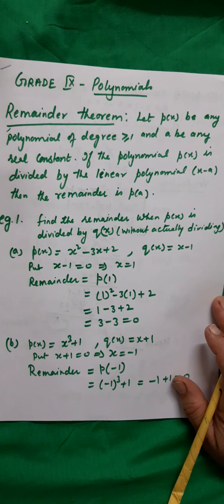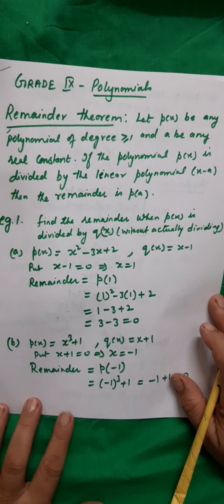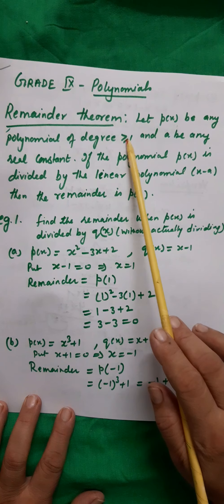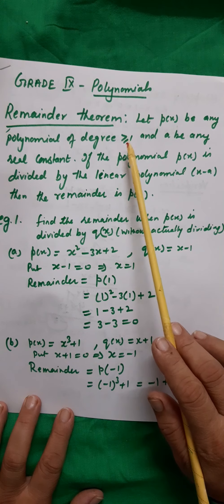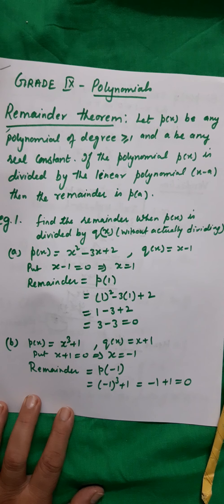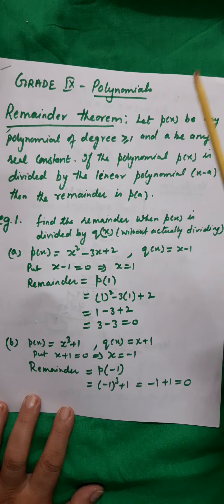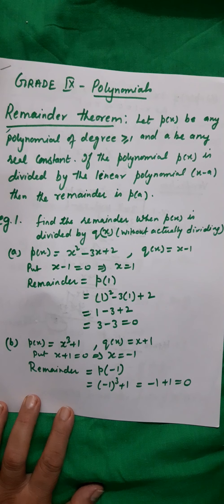This theorem means that if you have any polynomial of degree greater than or equal to 1 — it cannot be 0, because a degree of 0 means it is a constant polynomial. The polynomial must contain a variable, which is only possible if its degree is 1 or more, such as x, 2x, x+5, or 2x−7.